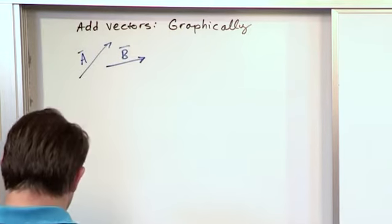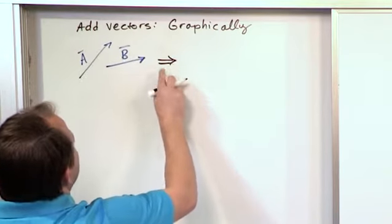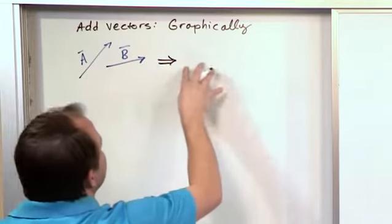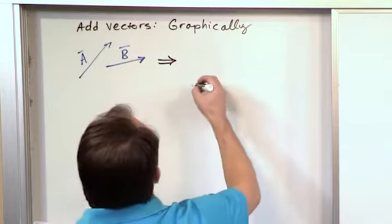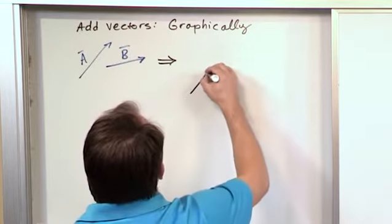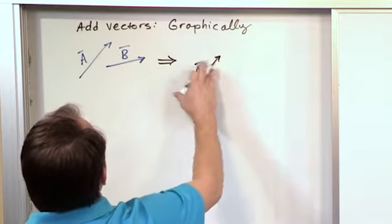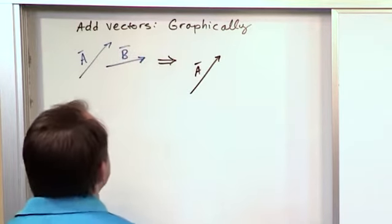What you need to do is redraw the situation. So I'll put an arrow here saying that I'm moving from this representation to something else I'm going to draw. And what I'm going to do is redraw vector A exactly as it sits or pretty close. Maybe that's a little bit steeper, but it's attempting to draw vector A exactly as it sits.